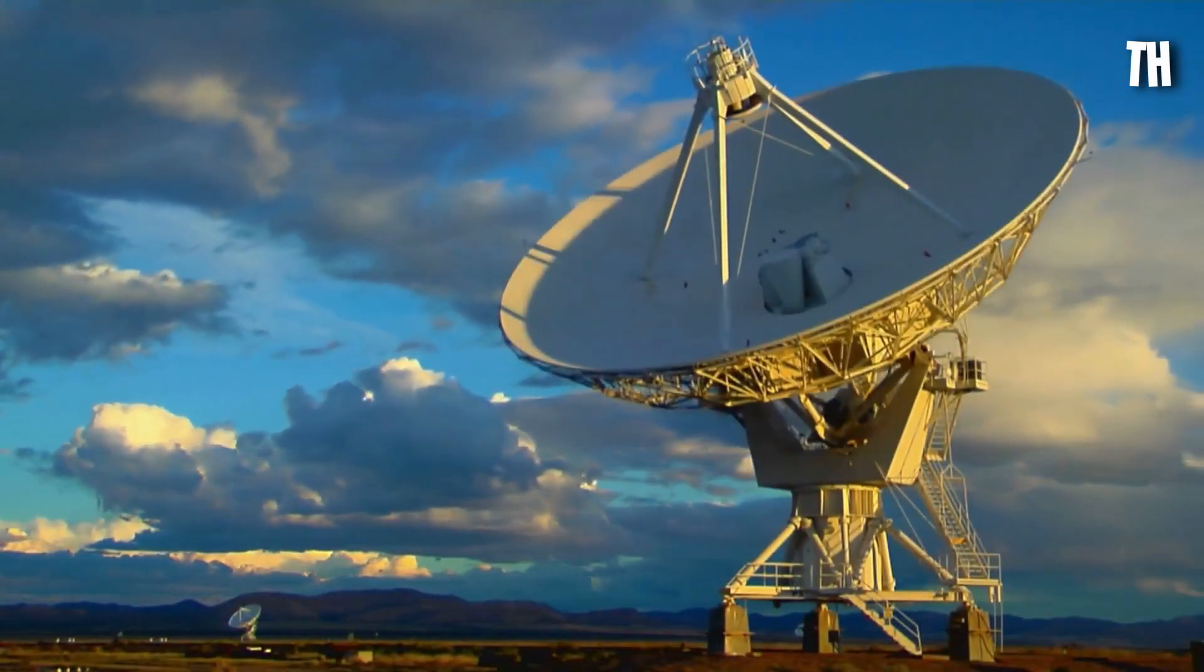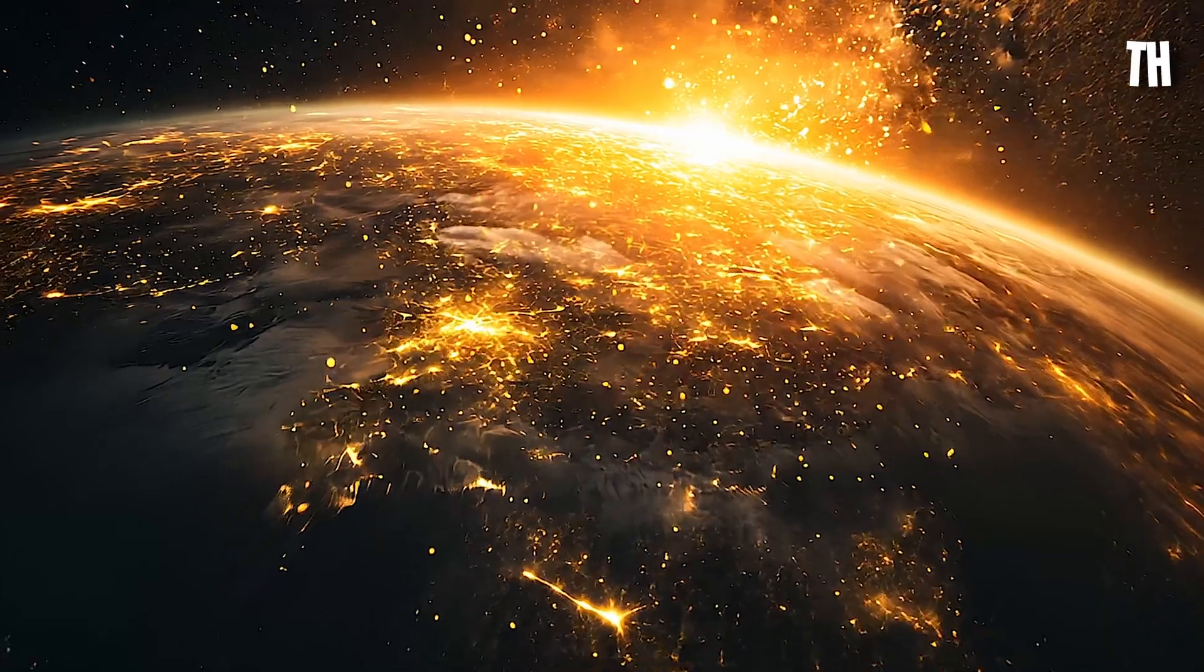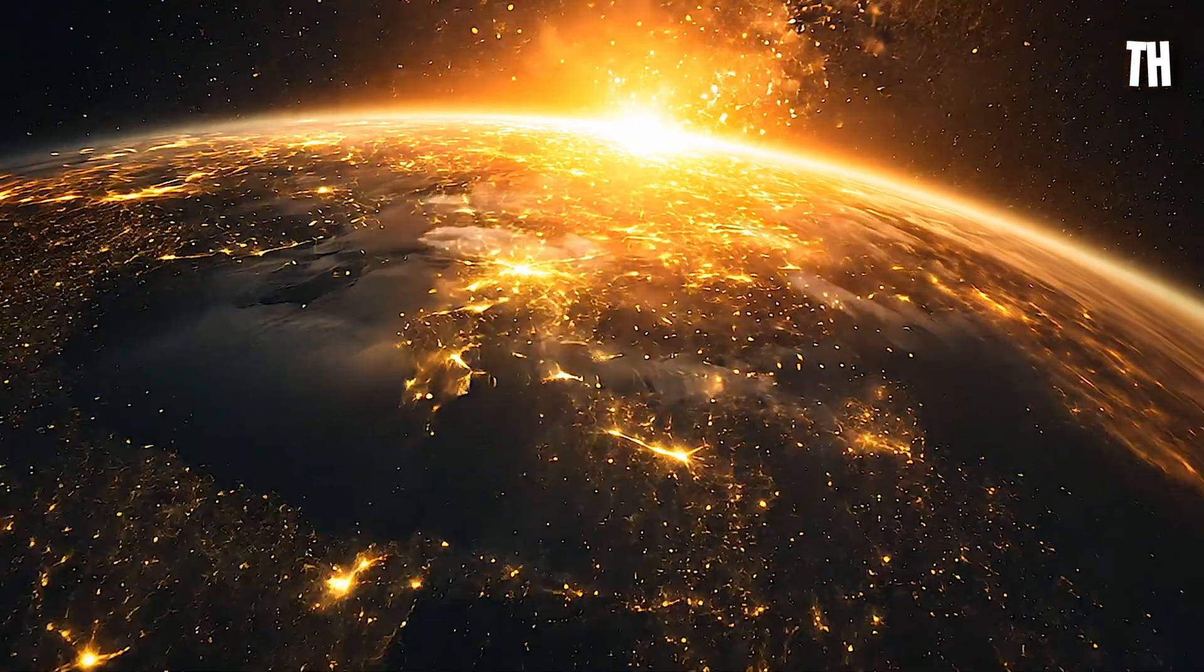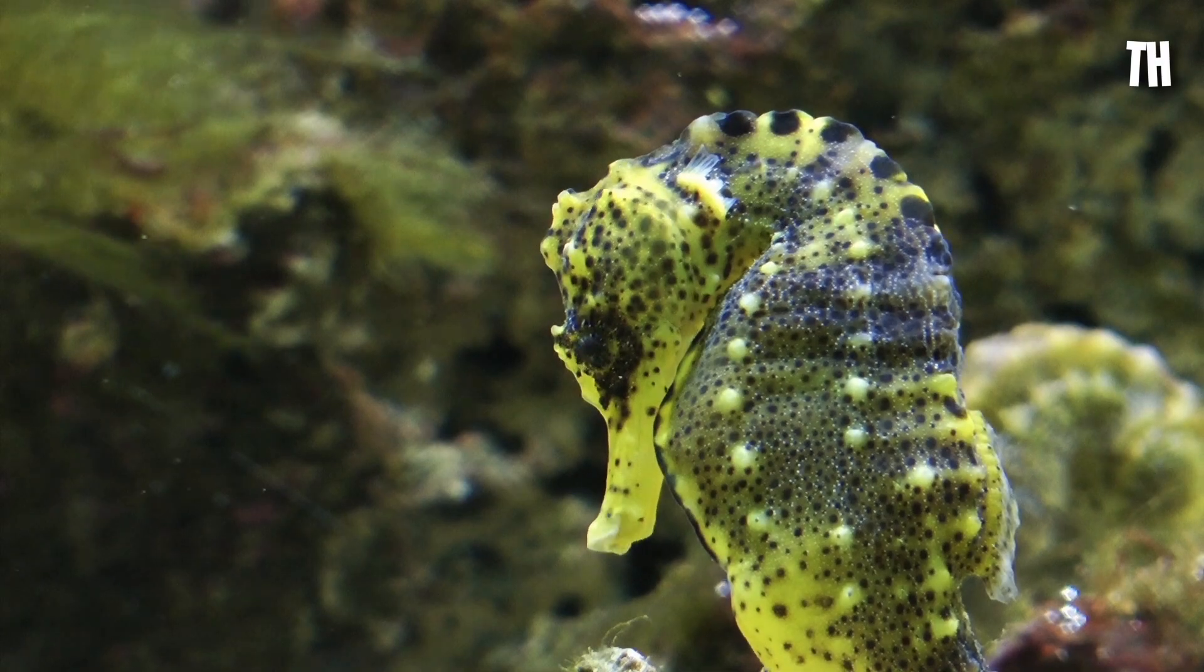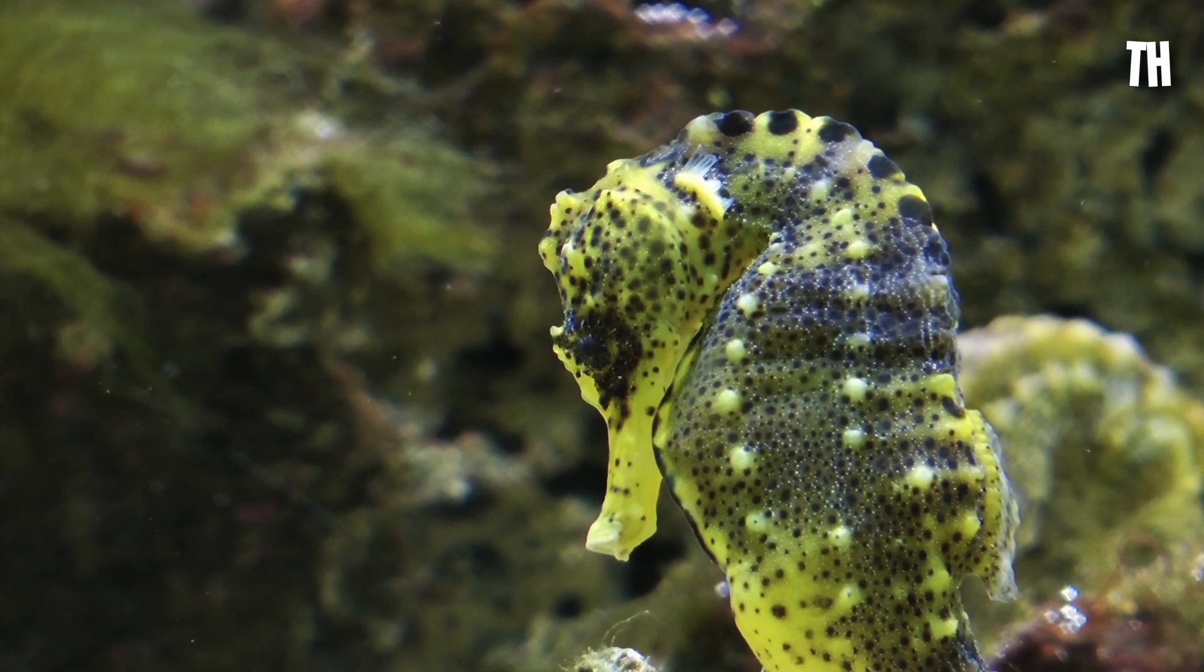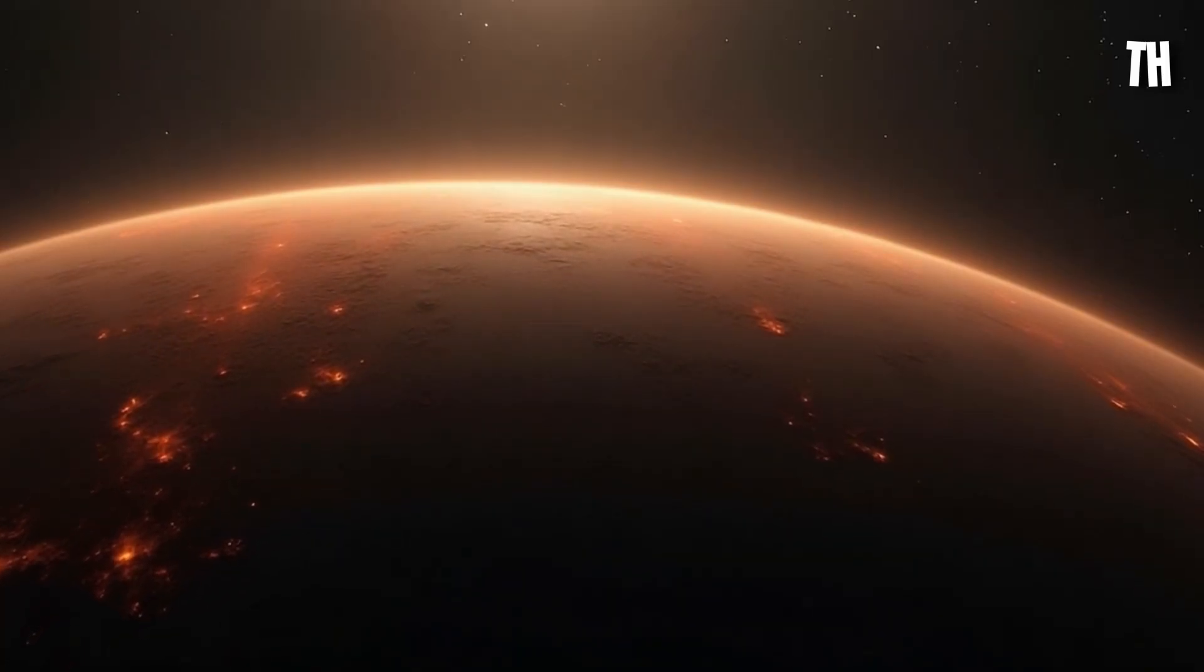Scientists believe a gamma-ray burst may have hit Earth around 450 million years ago, triggering the Ordovician mass extinction, which wiped out over 70% of marine species. No crater, no asteroid, just radiation. From a star we never saw. And if it has to happen again, then it would be cruel.